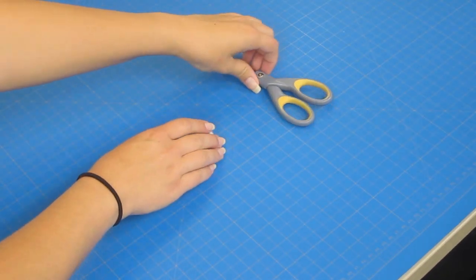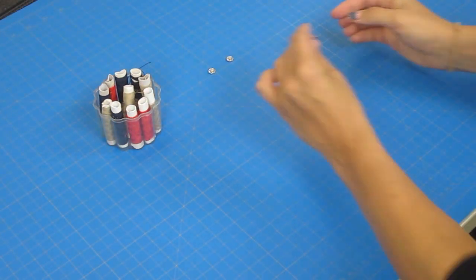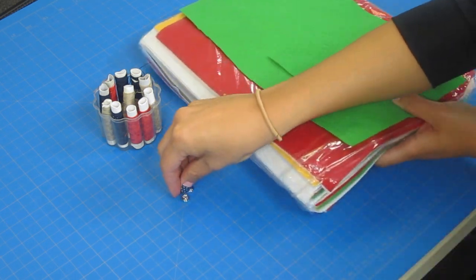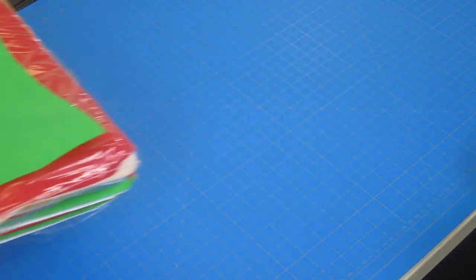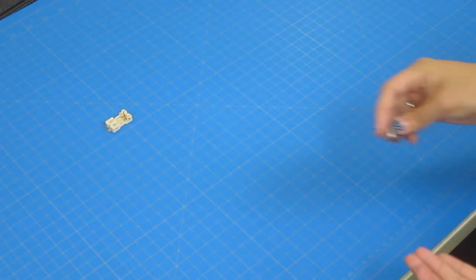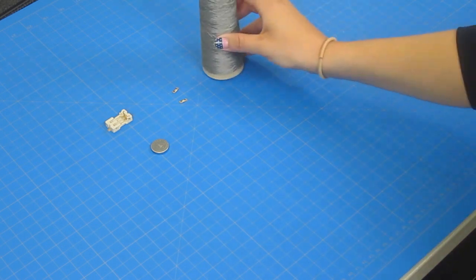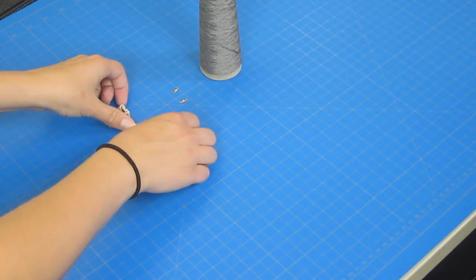Today we'll need needles and scissors, thread, snaps, and felt, battery holder, battery, and your LEDs along with your conductive thread.